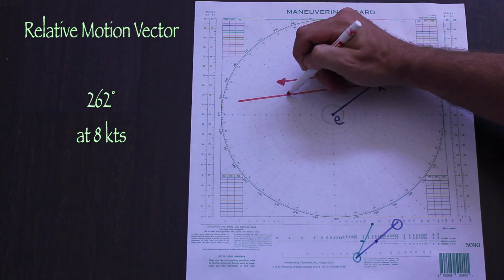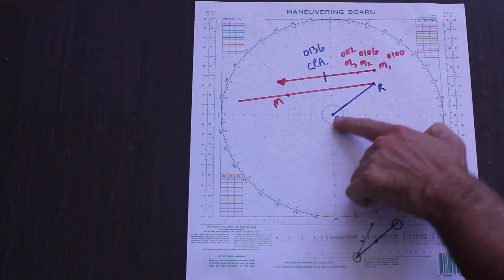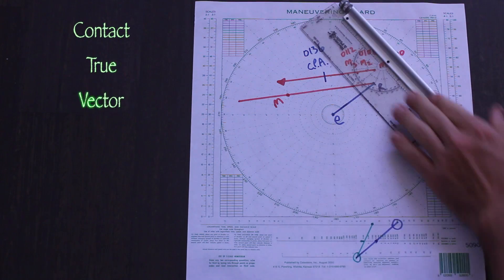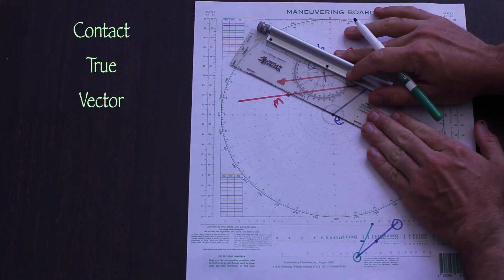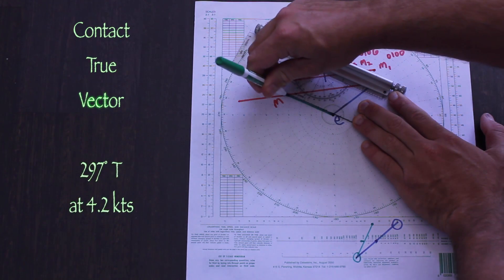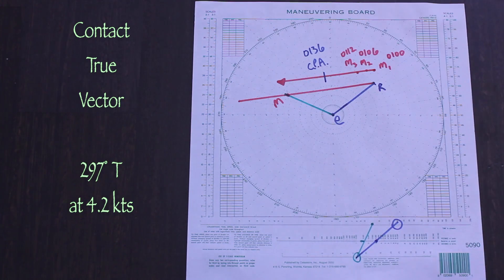We can label that point M, and whatever is left, the vector E to M, is the contact's true course and speed. The course is equal to the bearing of the EM vector, and the speed is equal to the length of the EM vector.